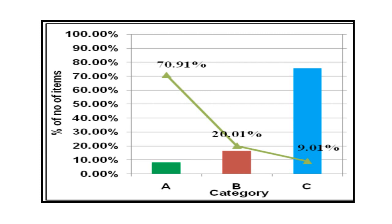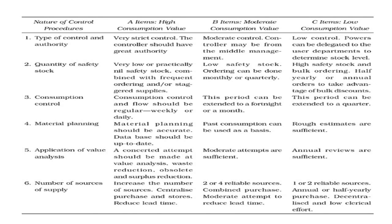With a large number of drugs, we find that less than 10% of drugs fall under Group A but represent more than 70% of cost, while more than 70% of drugs are in Group C with only 9% of cost. From this ABC analysis, Group A drugs need very strict control, B items moderate control, and C items low control. Because Group A drugs are high cost, they should have very low or practically nil safety stock, whereas Group C drugs with low price can have a high safety stock level.